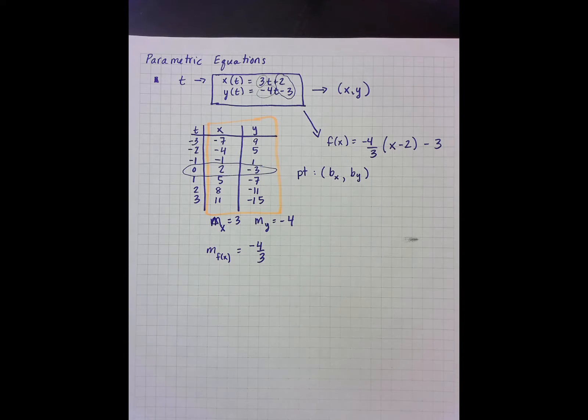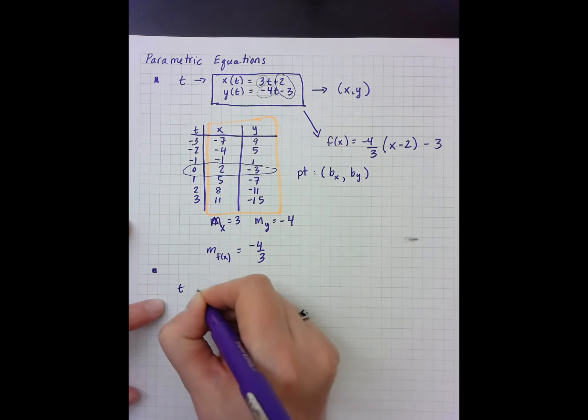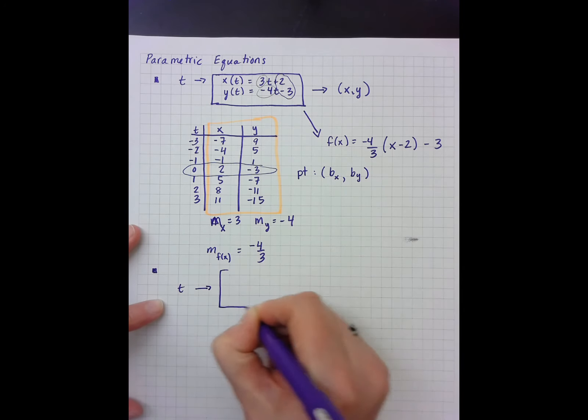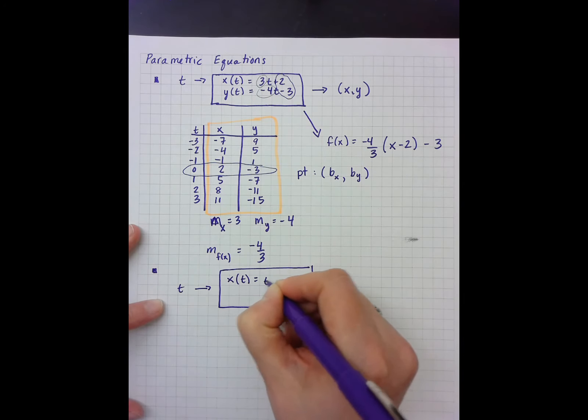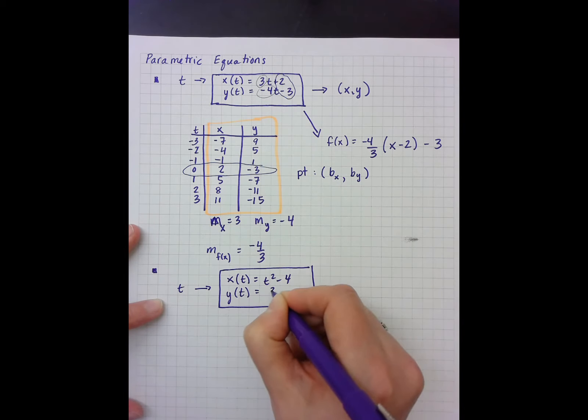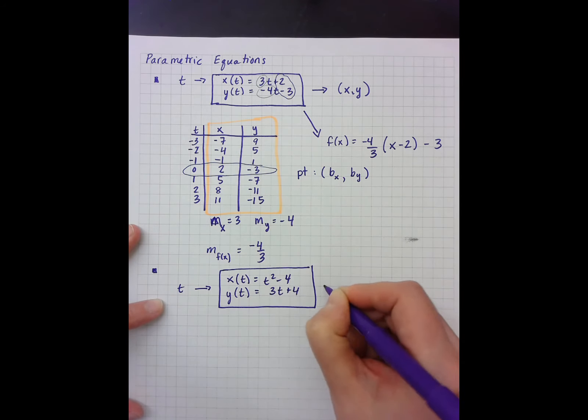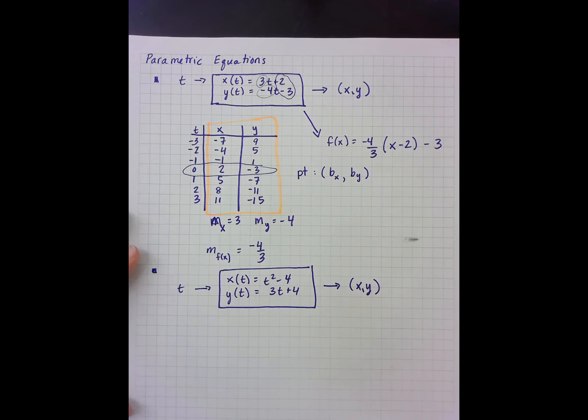Now this gets to be in some ways a little more fun once we move away from linear functions. And so let's look at an example where we don't have two linear functions. So I have x of t equals t squared minus 4 and y of t equals 3t plus 4. And I want to get an x comma y.